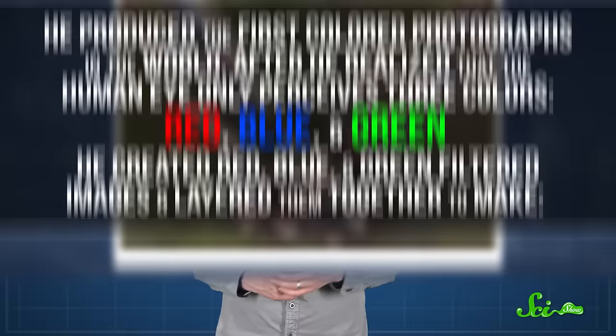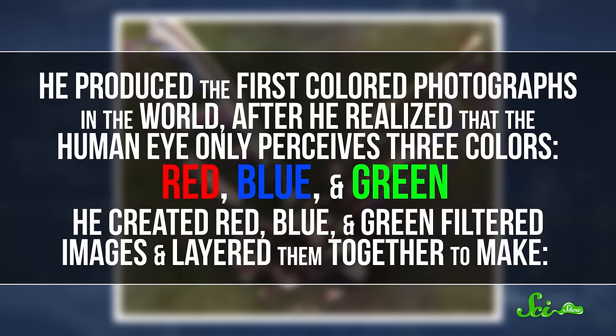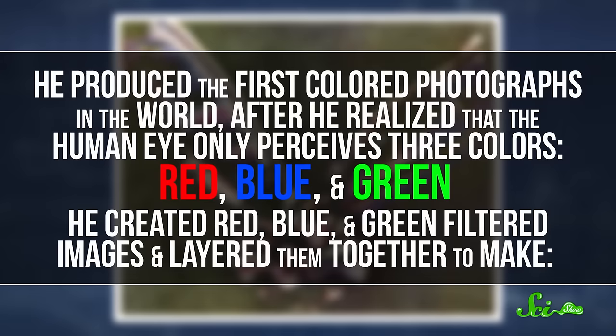And he produced the first color photographs in the world, after he realized that the human eye only perceives three colors: red, blue, and green. He created red, blue, and green filtered images, and layered them together to make a colored photo of a tartan ribbon. This trichromatic process was the forerunner to all modern color photography.